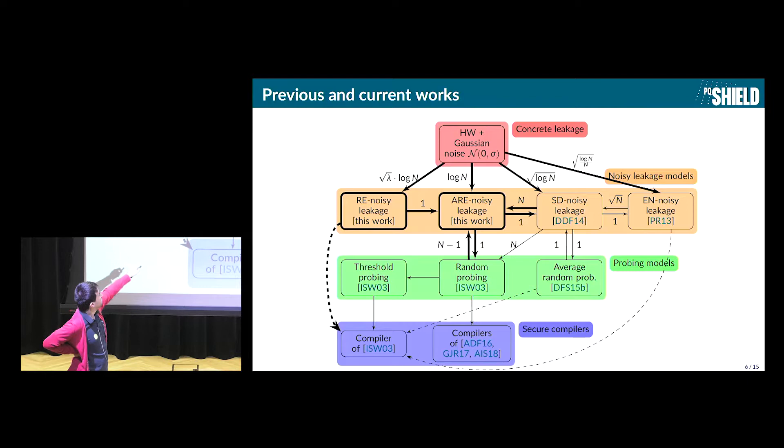And so what we do in this work is to propose two new leakage models, and we actually show that the two noisy leakage models that we introduced and the two which already existed can actually be seen as four different instantiations of one single abstract model. And this unification is done using the pointwise mutual information. So we show equivalencies between these models. We also do reduction between these models and probing models. And we also do one direct reduction to prove the security of a secure compiler. So unfortunately, I will not have time to talk about the last part, but only about the part about unifying this leakage models and about unifying noisy leakage models and probing models.